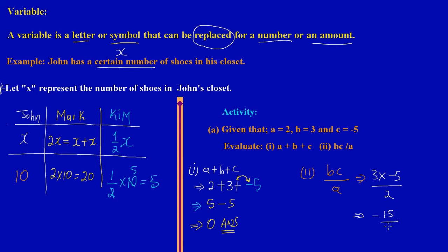We have negative 15 over 2. How many sets of 2 can we get out of 15? We get 7 with a remainder of 1, giving us negative 7 and one-half. A negative divided by a positive gives us a negative, so the answer is negative 7 and a half.